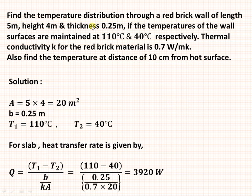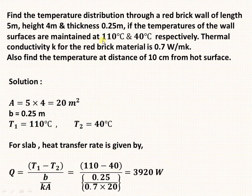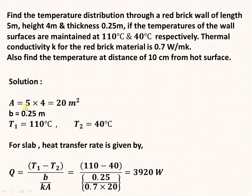We have to plot the temperature distribution along a brick wall of length 5 meters, height 4 meters, and thickness 0.25 meters. The boundary conditions are: one face is maintained at 110 degrees centigrade and the other face at 40 degrees centigrade. The thermal conductivity of the material is 0.7 watt per meter. The cross-sectional area is 20 square meters and the width is 0.25 meters.